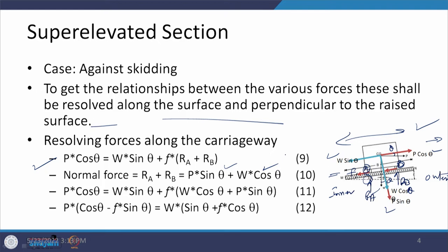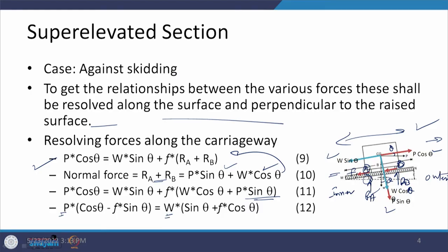Putting these values into the equation, we get: P·cosθ = W·sinθ + F·(P·sinθ + W·cosθ). Rearranging with respect to P and W, we get: P·(cosθ − F·sinθ) = W·(sinθ + F·cosθ).